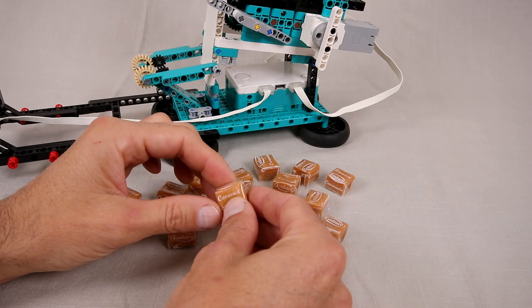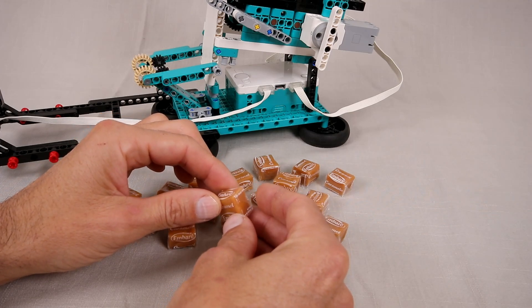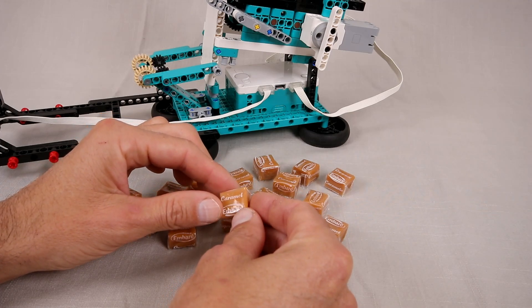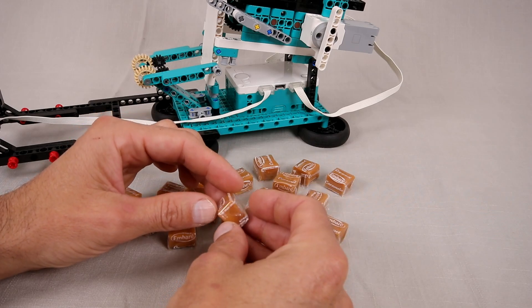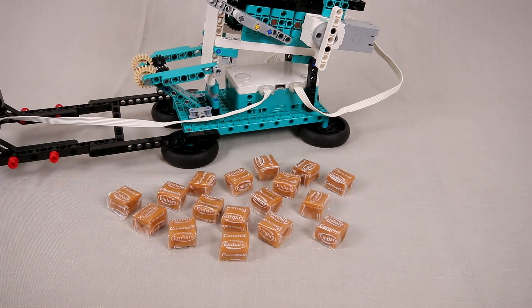Not only are these delicious, they actually make great ammunition for a launching machine as they are pretty small and light and they have this nice rectangular prism shape which means they stack very easily.